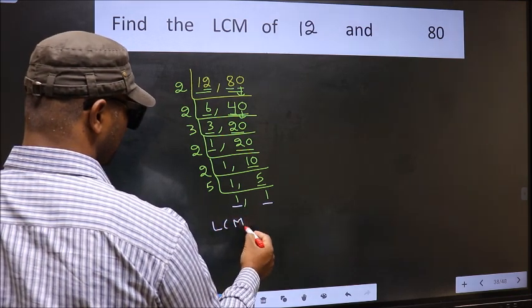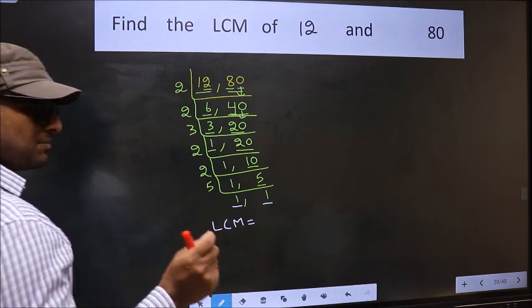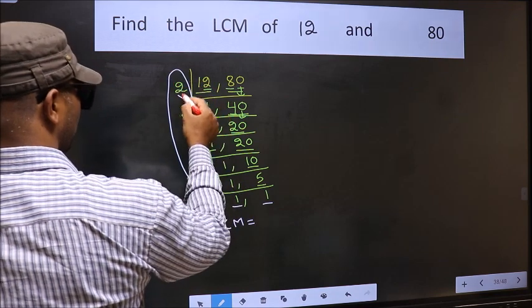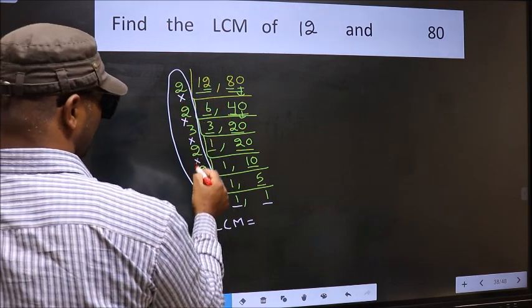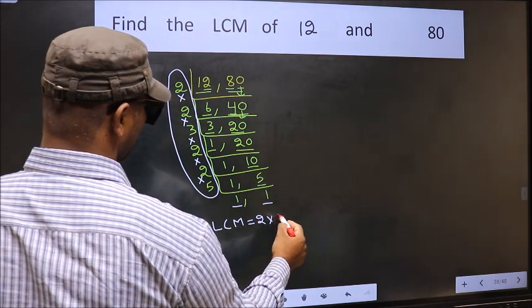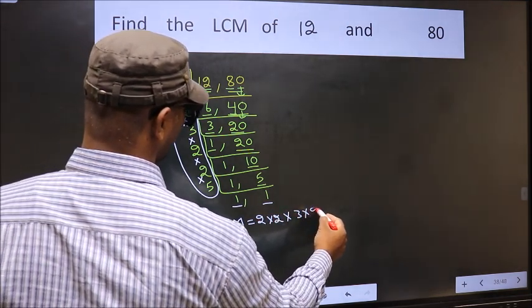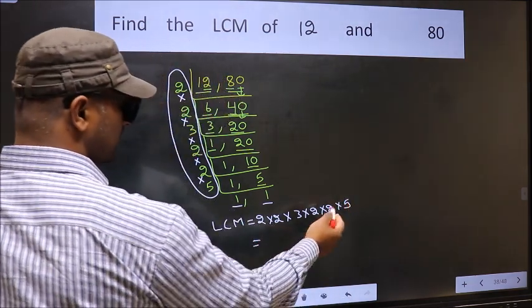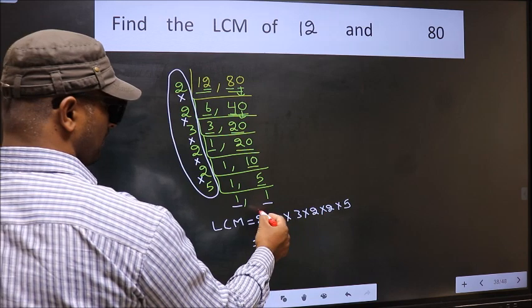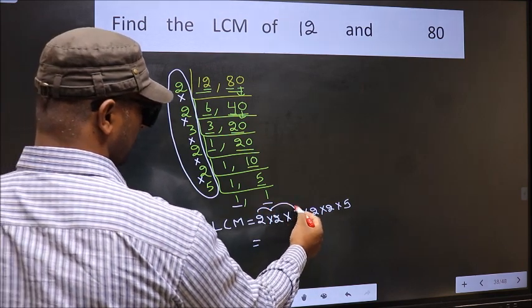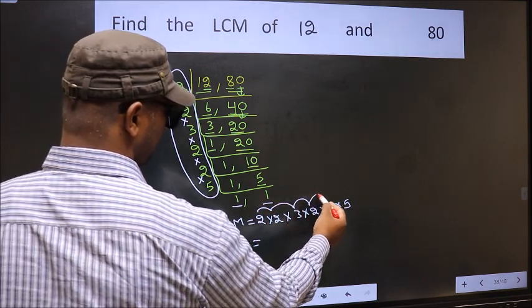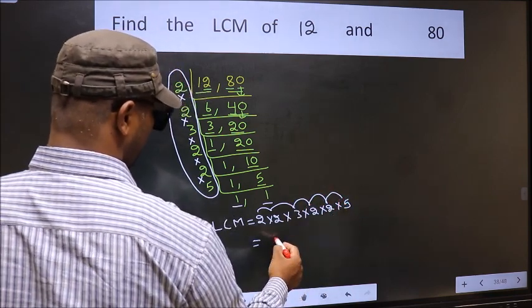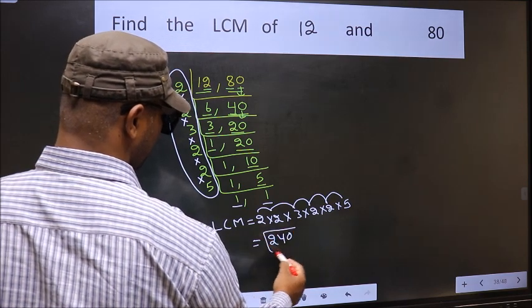So, our LCM is the product of these numbers. That is 2 into 2 into 3 into 2 into 2 into 2 into 5. Let us multiply these numbers. 2 into 2, 4 into 3, 12 into 2, 24 into 2, 48 into 5, 240 is our LCM.